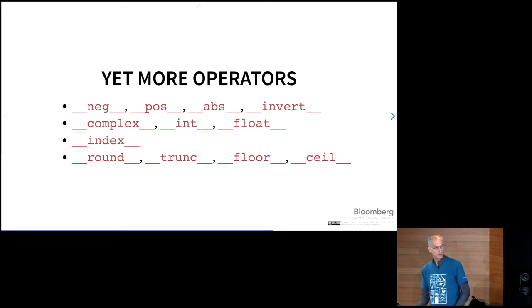There's lots more operators. Some of these are the unary negative, unary positive, abs, invert, so on and so forth. If you are interested in these, these are well documented in the Python documentation.